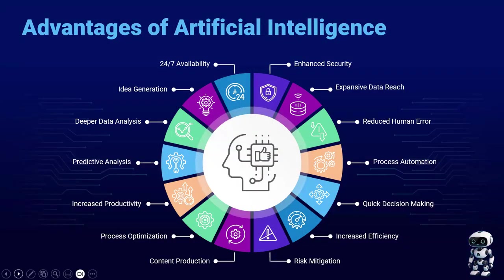There are many advantages of AI. Some of the bigger advantages: it's available 24/7, it's really useful for idea generation and deeper data analysis. We also use it for predictive analysis to increase productivity, optimize processes, and produce content — which is one of the main ways we use AI at Bright Path. AI also allows for risk mitigation, increasing efficiencies, helping you make quick decisions, automating processes, and reducing human error. It has an expansive data reach, and there is enhanced security that comes along with AI.